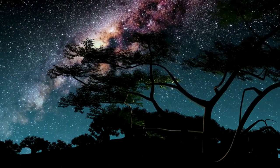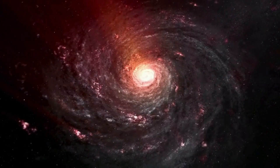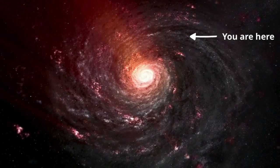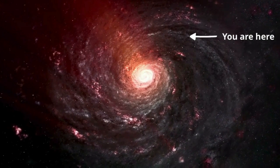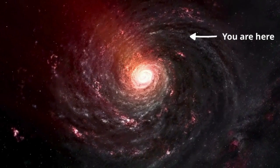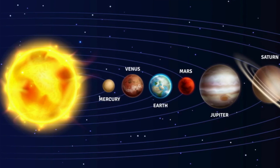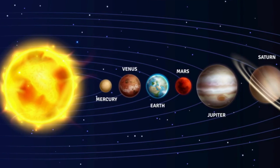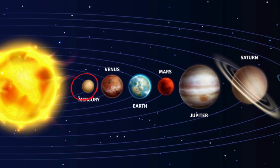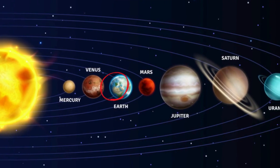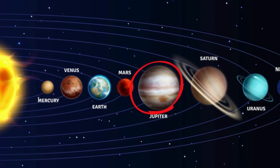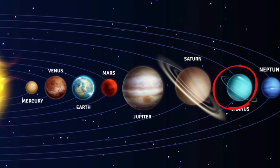Our solar system is located in the Orion arm of the Milky Way galaxy. It consists of the sun and the objects that orbit it, either directly or indirectly. This includes several objects. First, the planets. The eight planets in order from the sun are Mercury, Venus, Earth, Mars, Jupiter, Saturn, Uranus, and Neptune.